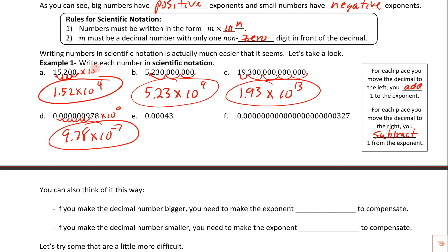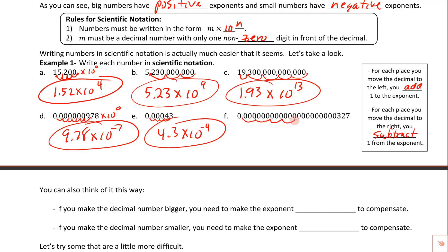Similarly, for 0.00043, we move the decimal four places to get 4.3 times 10 to the negative 4. And for the weight of an atom of gold, counting in threes: three, six, nine, twelve, fifteen, eighteen, twenty-one, twenty-two places total. So this is 3.27 times 10 to the negative 22.